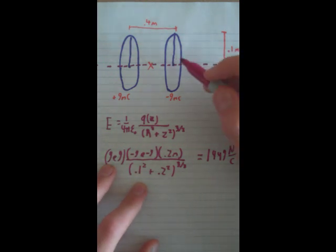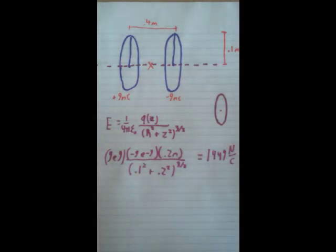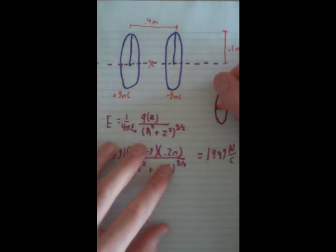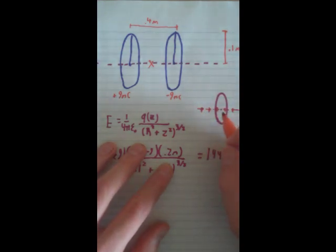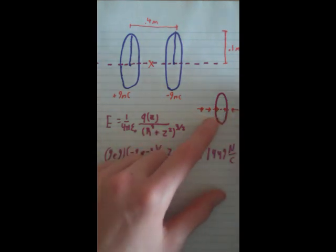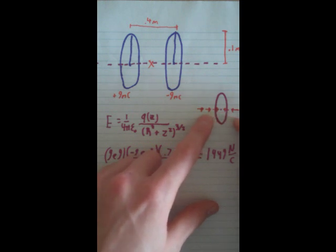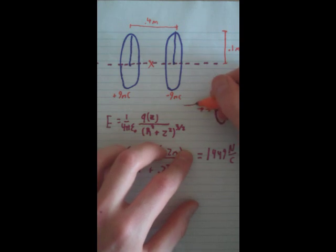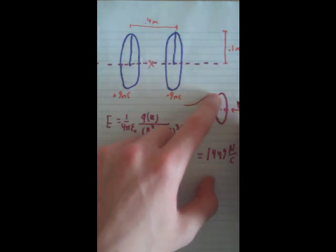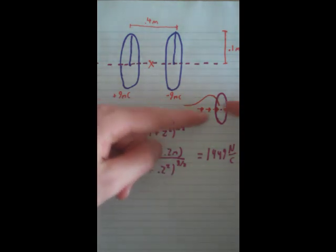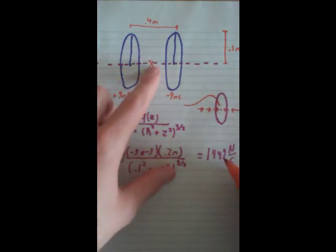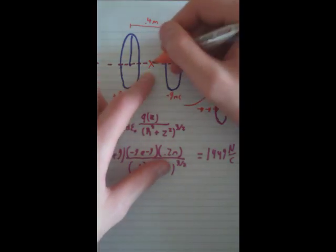Now we need to think about the direction the field is pointing. When you have a ring that is negative, the electric field arrows are going to point inward — whatever direction you're coming from, they point in toward it. The magnitude starts off really small, gets very large quickly, then continually gets smaller toward infinity. The important thing is that it's always pointing toward the negative ring. So for our setup, the electric field from the negative loop is pointing in one direction along the axis.